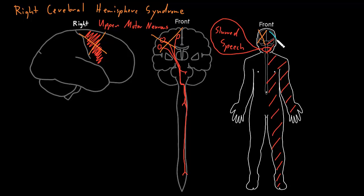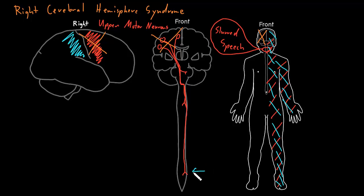We can also see somatosensory abnormalities on the left side of the body with right cerebral hemisphere dysfunction, because there are areas in the right cerebral hemisphere that receive most of that somatosensory information and bring it to consciousness. Once somatosensory information enters the spinal cord or brainstem, the pathways carry that information to the other — the right — cerebral hemisphere. So dysfunction of those areas causes somatosensory abnormalities on the left side of the body.